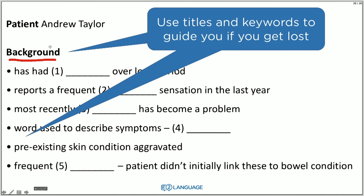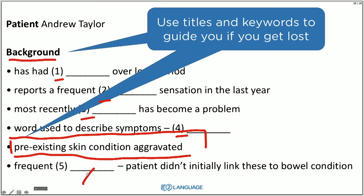What's going to happen is you're going to have gaps one, two, three, four — and then there's going to be one that does not have a gap. This will allow you to catch up, and then the audio will talk for a while about his preexisting skin condition and how it was aggravated before moving on to number five. This is the tough thing about these listening tests: you're listening, you're reading, and you're quickly writing down the answer — all at once at the same time. It's pretty tough.